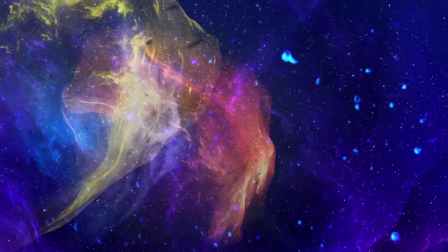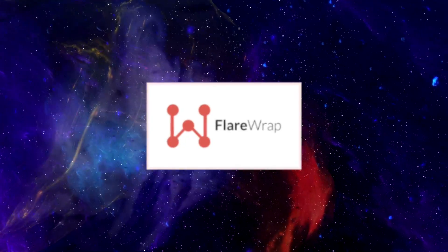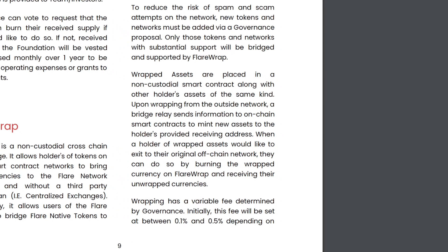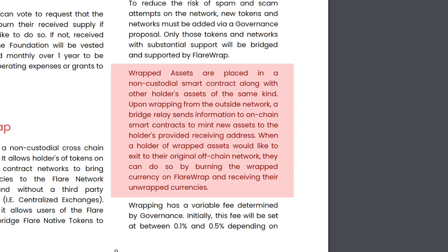Y assets will come into existence via Flir Wrap, one of the products offered by Flir Finance. From the Flir Finance white paper, we can see that wrapped assets are placed in a non-custodial smart contract, along with other holders' assets of the same kind. Upon wrapping from the outside network, a bridge relay sends information to on-chain smart contracts to mint new assets to the holder's provided receiving address. When a holder of wrapped assets would like to exit to their original off-chain network, they can do so by burning the wrapped currency on Flir Wrap and receiving their unwrapped currencies.